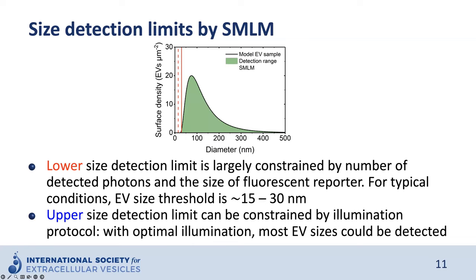For SMLM, the lower size detection limit is largely constrained by the number of detected photons — the larger the number of photons, the better the localization precision. The size of the fluorescent probe is also relevant; for example, antibodies are quite large, about 12 nanometers. For typical conditions, the lower EV size threshold is about 15 to 30 nanometers. However, this threshold can be reduced by optimizing probes and imaging protocols. The upper size detection limit can be constrained by the illumination protocol, but with optimal illumination and 3D detection, most EV sizes can be detected, including those above 500 nanometers.